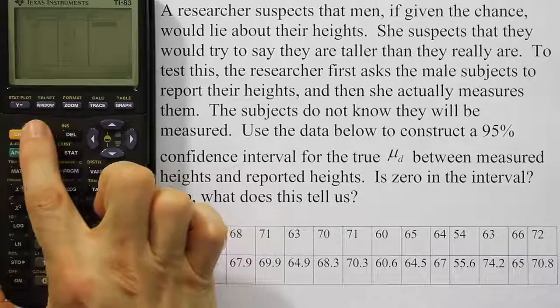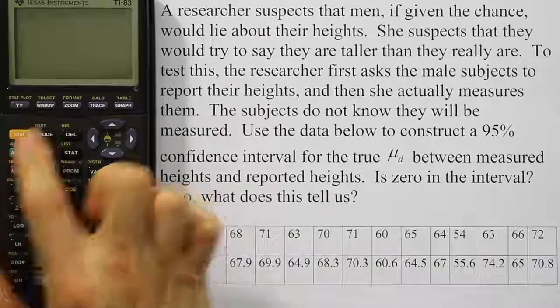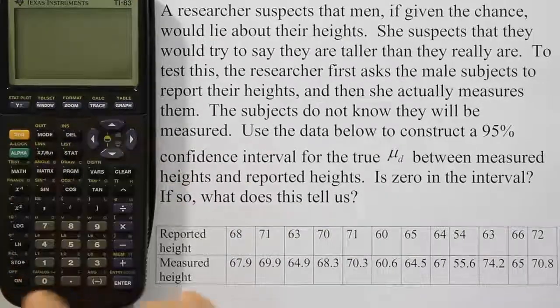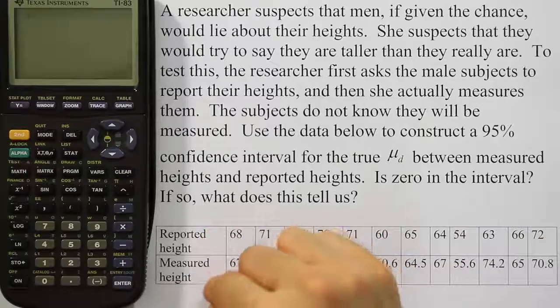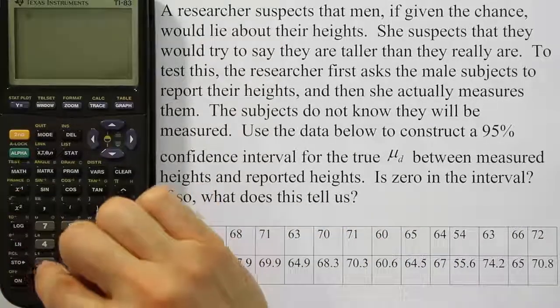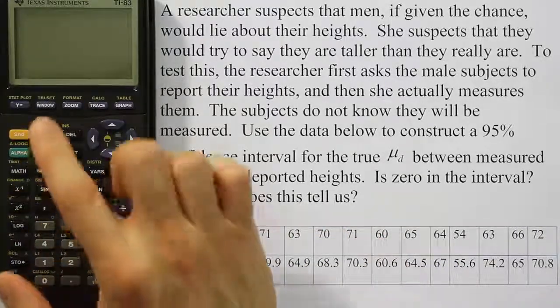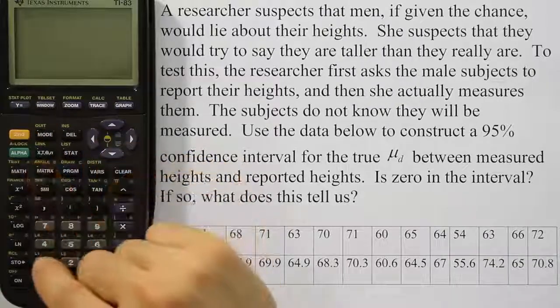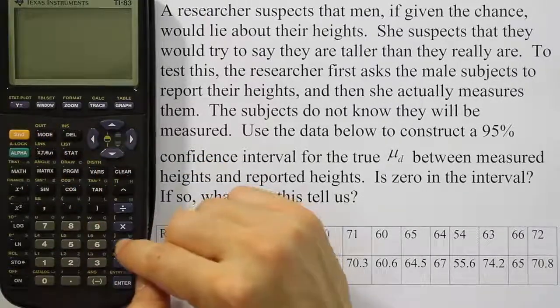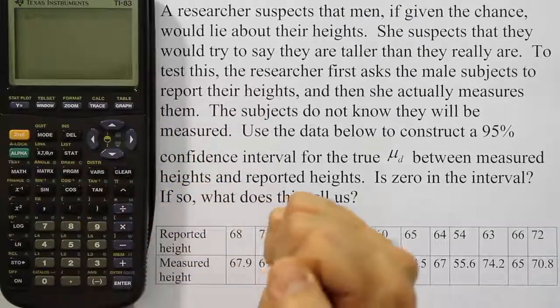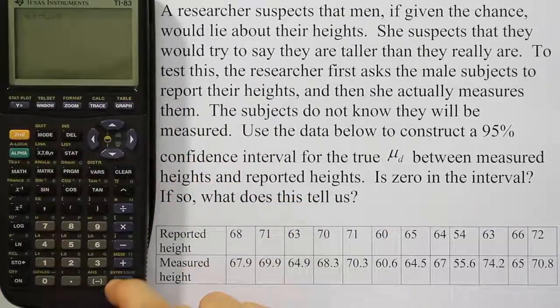We're going to hit 2nd QUIT. Once I get out of the screen, I'm actually going to tell it to do L1 minus L2. The way I do that is I'm going to get the little L1 that's above the one key by hitting 2nd and number one. That gives me L1, then minus 2nd and the number two, that gives me L2. And then I hit ENTER.